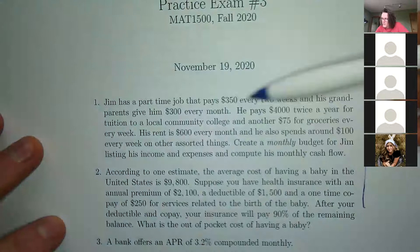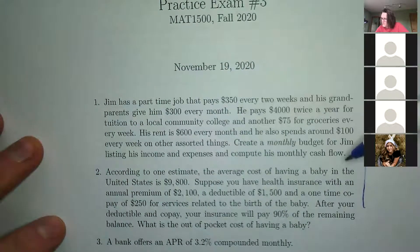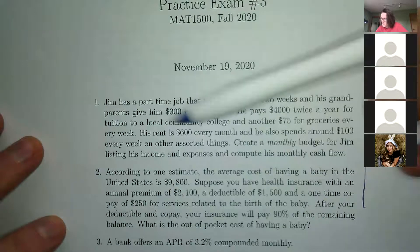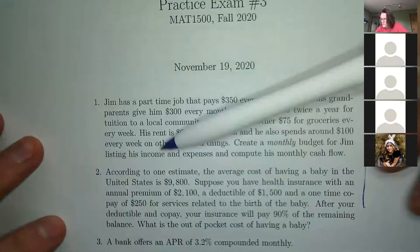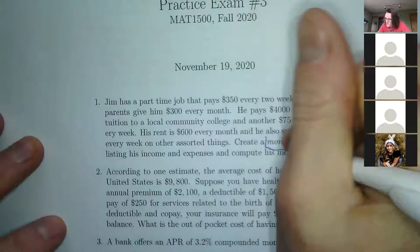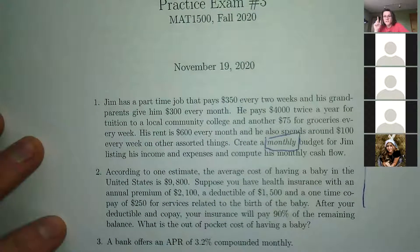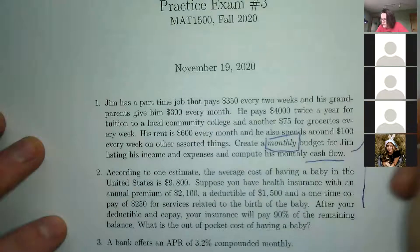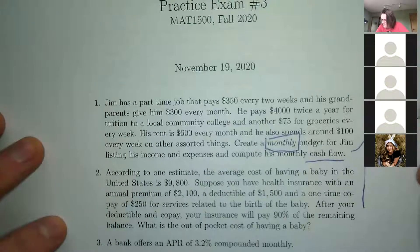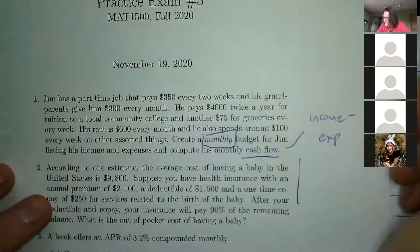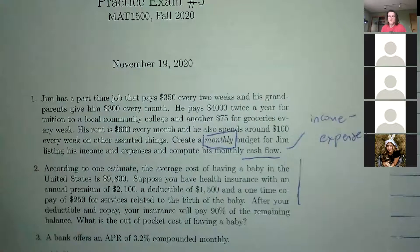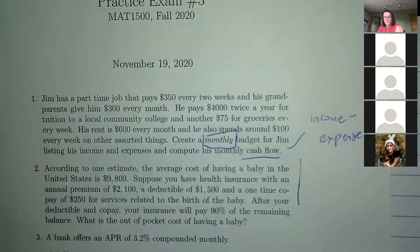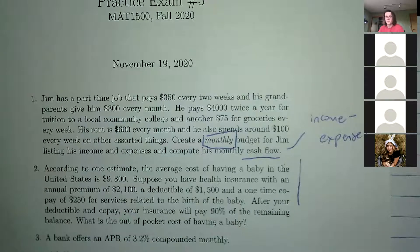The first problem: Jim has a part-time job. We're given a list of what he pays — tuition, groceries at $75, rent at $600 — and we want to create a monthly budget listing his income and expenses, and calculate his monthly cash flow. Monthly cash flow is income minus expenses — how much money you have after paying all your bills. If it's negative, you don't have enough; if it's positive, you're in good shape.